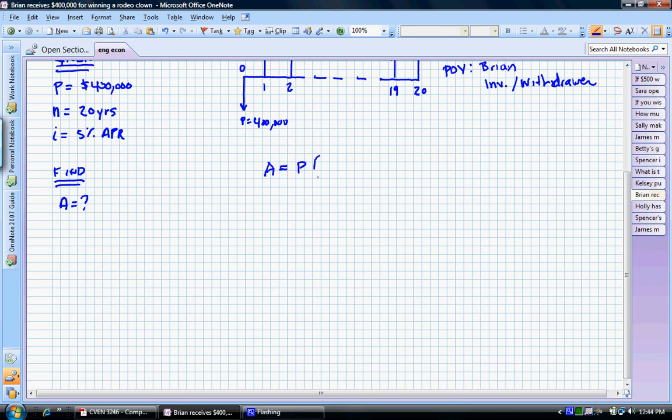We will multiply by i times (1 + i) to the n over (1 + i) to the n minus 1. You can see how this factor is a little bit cumbersome here and not real fun to deal with.